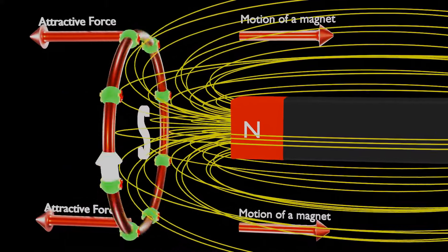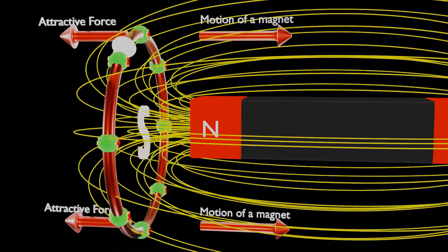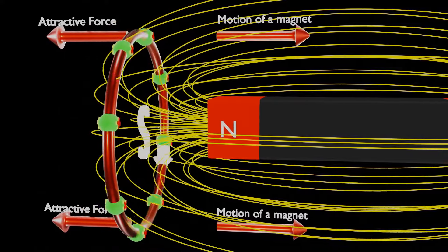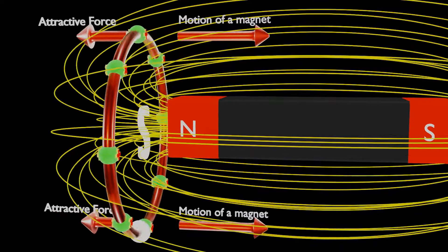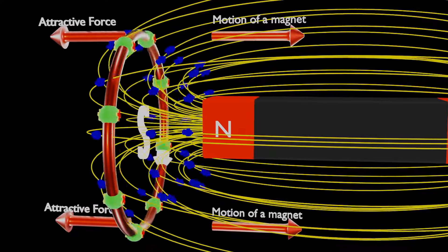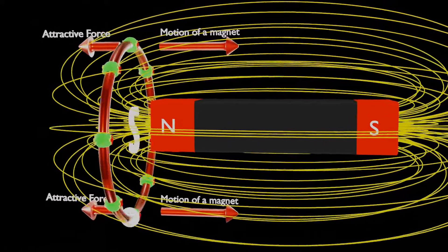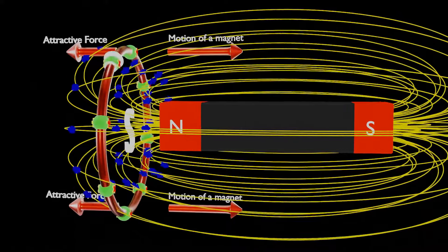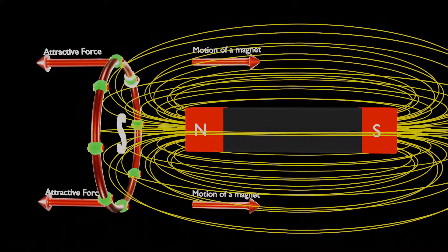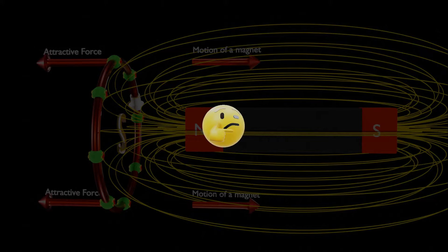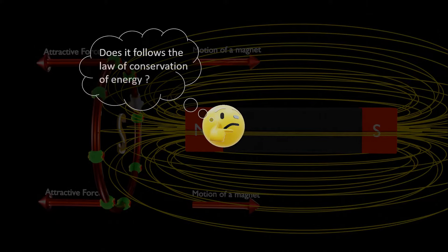In this way, using Lenz's law, we can find the direction of current induced in Faraday's law of electromagnetic induction. This interesting behavior of a coil — producing electrical energy to oppose the change of magnetic flux — raises the question: does it follow the law of conservation of energy?